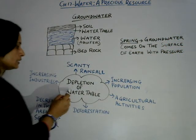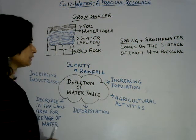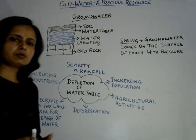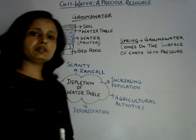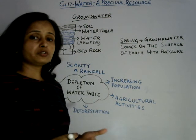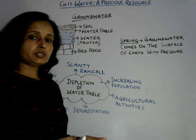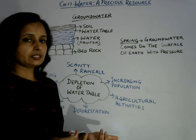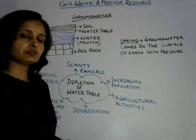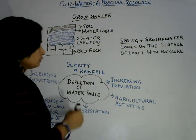Now look at the reasons for depletion of the water table. First: scanty rainfall. Nowadays there is less rainfall — even during the rainy season, not much rainfall is taking place due to pollution and deforestation. So there is scanty rainfall. If there is scanty rainfall, then the infiltration process will not go on and the water table will deplete — it is reducing, going downward.